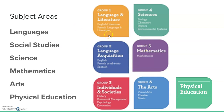As well as being transdisciplinary, there are subject areas which must be covered: languages, society, sciences, mathematics, arts, and physical education. For instance, if students are focusing on transportation in a city, they'll use languages to discuss it, look at the impact on society in social studies, examine it from a science perspective, use mathematics to explore it more deeply, do arts about how transportation impacts a city, and link in physical education. It's all brought together in the transdisciplinary theme.